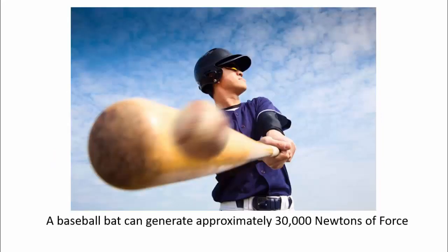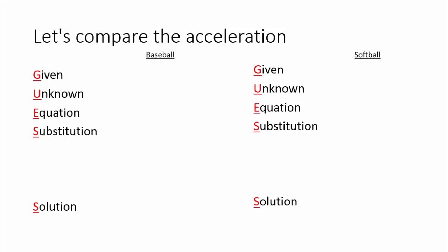If we take a person who can swing a baseball bat pretty well, they could generate 30,000 newtons of force. I actually looked up how much a major league baseball player could hit with. How would that affect the acceleration of the ball when it comes off of the bat? So let's compare.